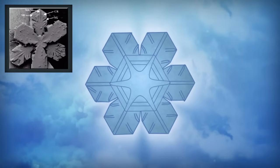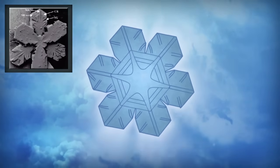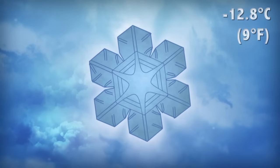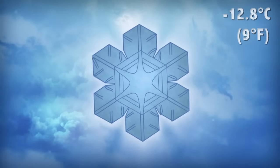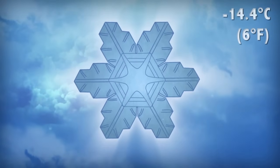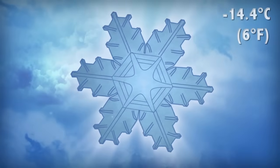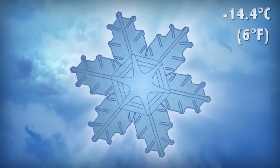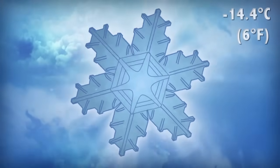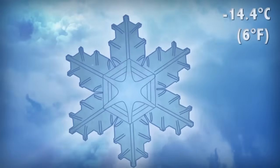When the temperature cools to minus 13 Celsius, new growth at the branch tips narrows. At minus 14, side branches sprout on each branch. Suddenly the crystal encounters a quick blast of warmer air, followed by cooler air, and more side branches sprout.